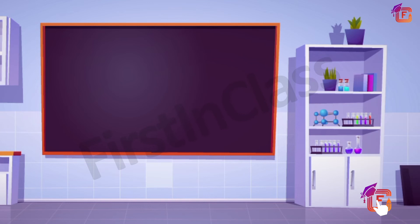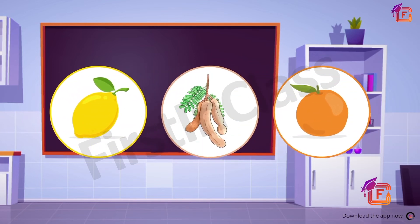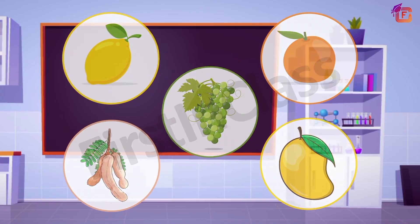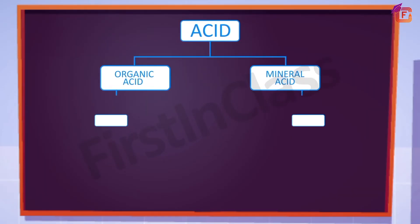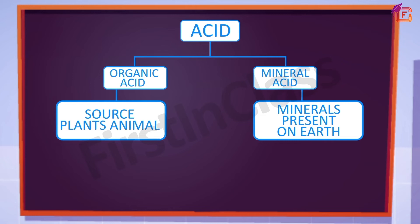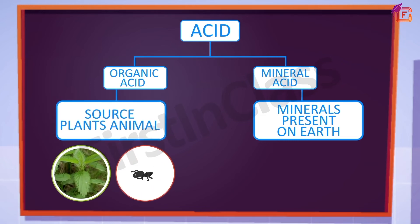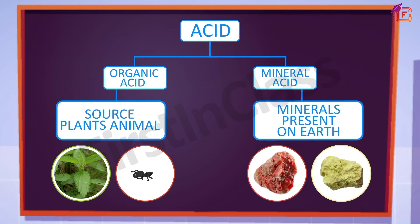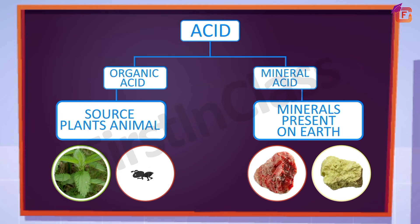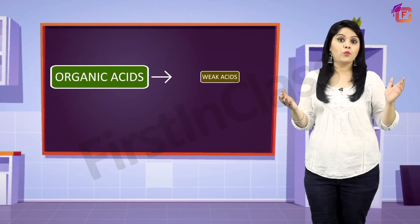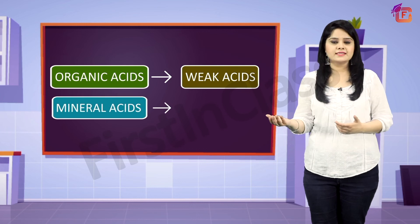No — carbonic acid is the only mineral acid which is weak. In this video we learned about the taste of acids, which is sour, and the classification of acids on the basis of their occurrence. If an acid is obtained from an animal or plant, it is an organic acid, whereas if the source is a mineral present on earth, it is a mineral acid. Organic acids are weak acids, whereas mineral acids are strong acids.